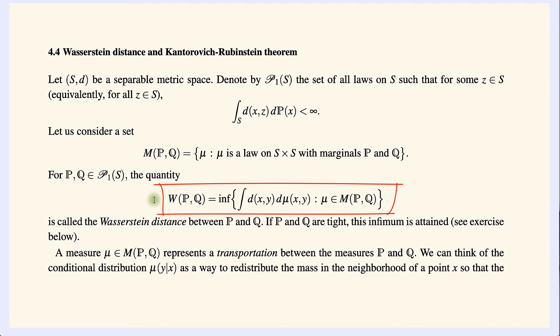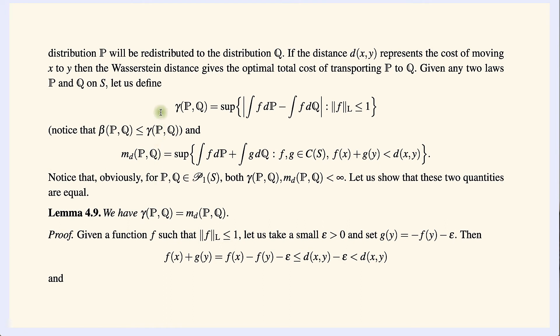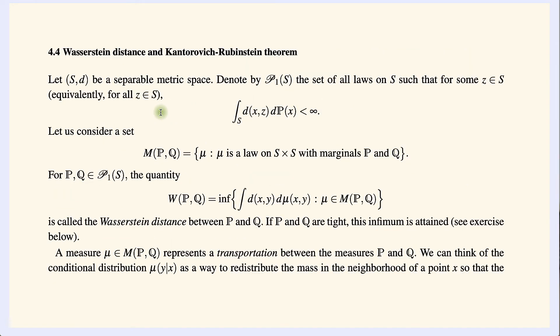The main result is the Kantorovich-Rubinstein theorem. On a separable metric space, the Wasserstein distance equals another quantity denoted γ(p, q), defined similarly to the Bounded Lipschitz metric but with the boundedness condition removed. A priori it looks very different from the Wasserstein metric, but magically these two quantities turn out to be equal. The proof is a beautiful application of the Hahn-Banach theorem. At the end of this section we also prove a generalization of the Kantorovich-Rubinstein theorem.